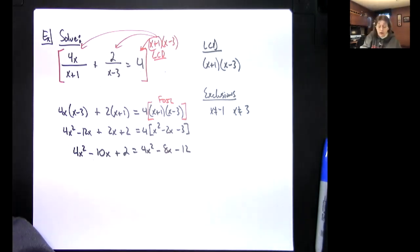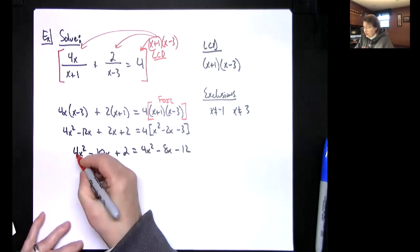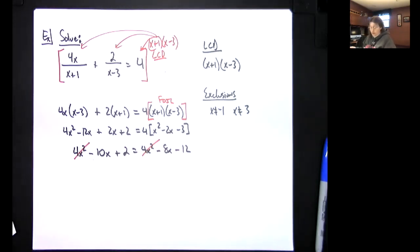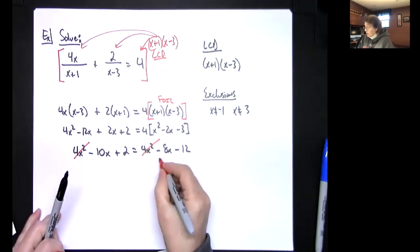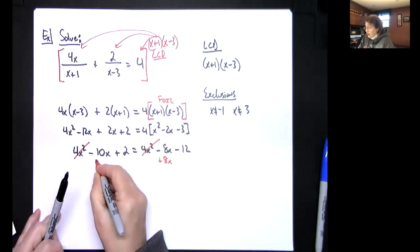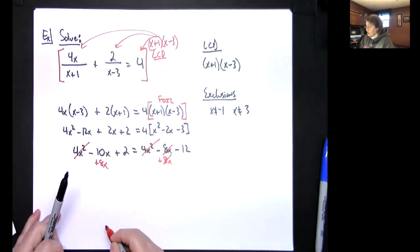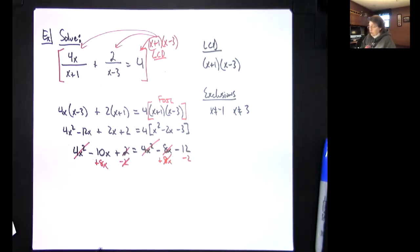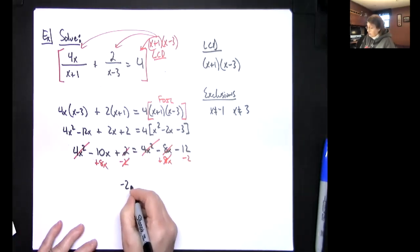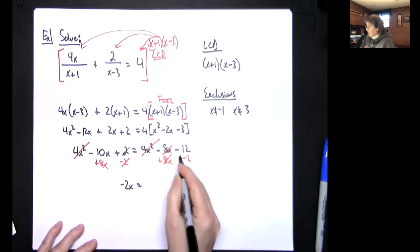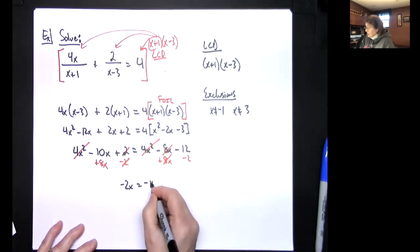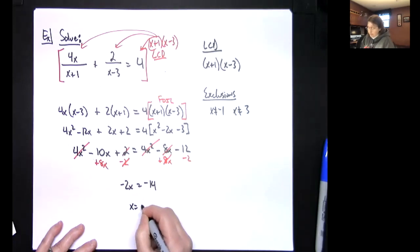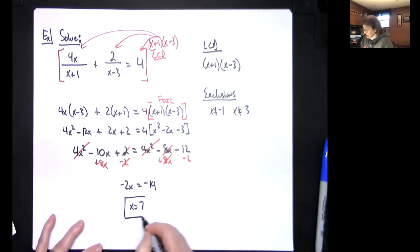Distributing the 4: 4x² minus 8x minus 12. Right away you can see that the 4x² and the 4x² are going to cancel — subtract from both sides. Now we're down to a two-step equation. Add 8x to both sides, those cross out. Subtract 2 from both sides, those cross out. That gives negative 2x equals negative 14.